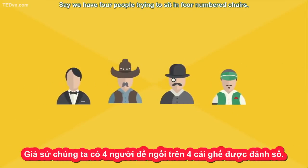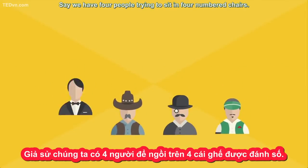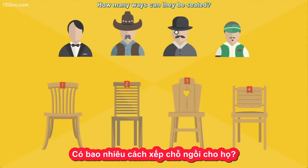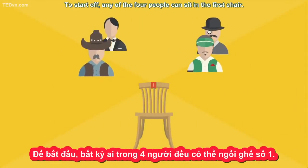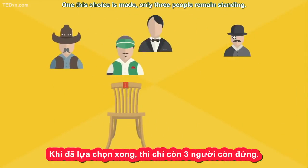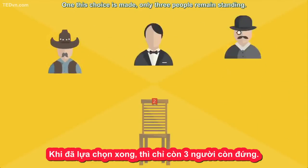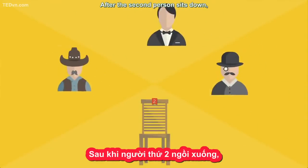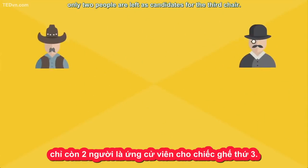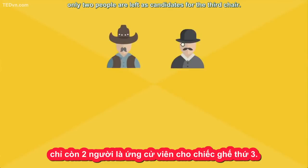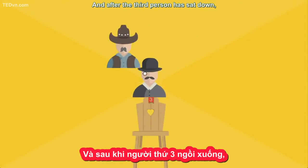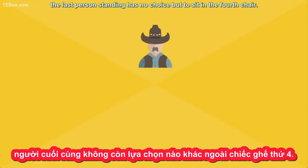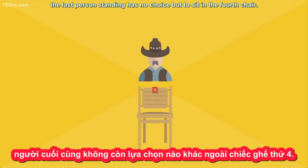Say we have four people trying to sit in four numbered chairs. How many ways can they be seated? To start off, any of the four people can sit in the first chair. Once this choice is made, only three people remain standing. After the second person sits down, only two people are left as candidates for the third chair. And after the third person is sat down, the last person standing has no choice but to sit in the fourth chair.